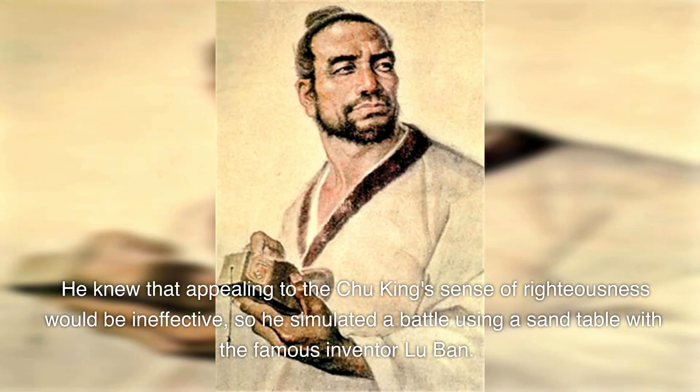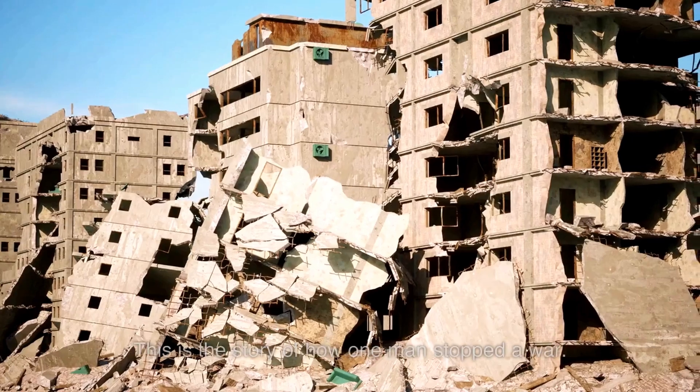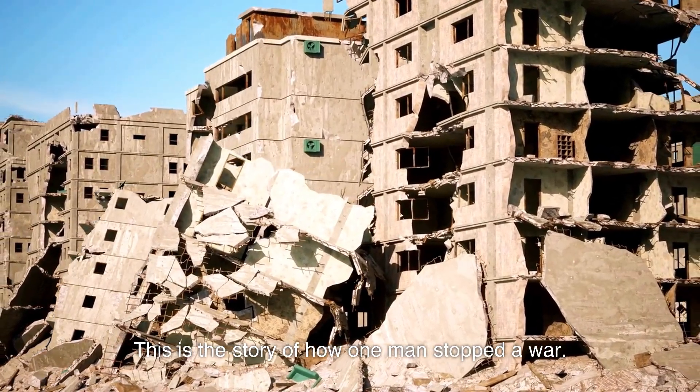He knew that appealing to the Chu king's sense of righteousness would be ineffective, so he simulated a battle using a sand table with the famous inventor Luban. Mosey won the simulation, and the Chu king, seeing his talent, had to abandon the attack on Song. This is the story of how one man stopped a war.